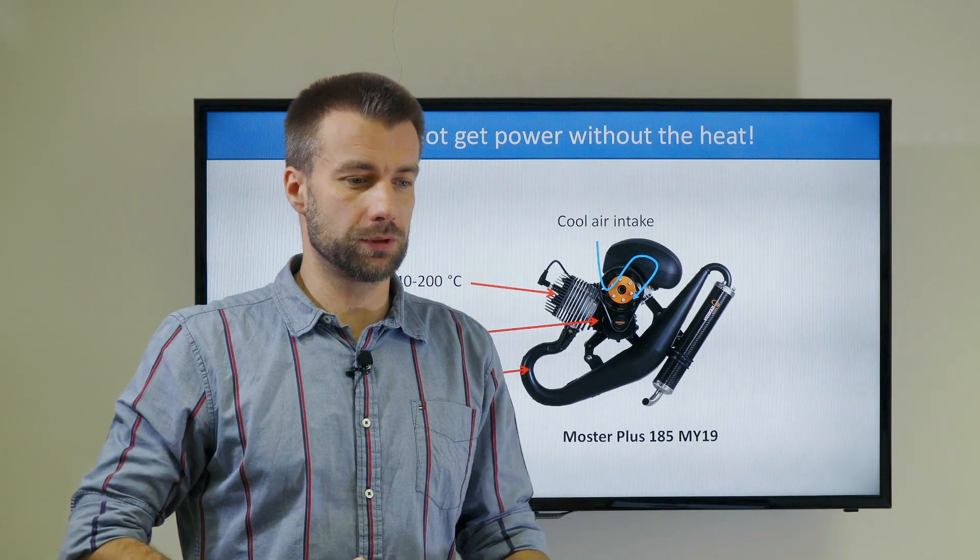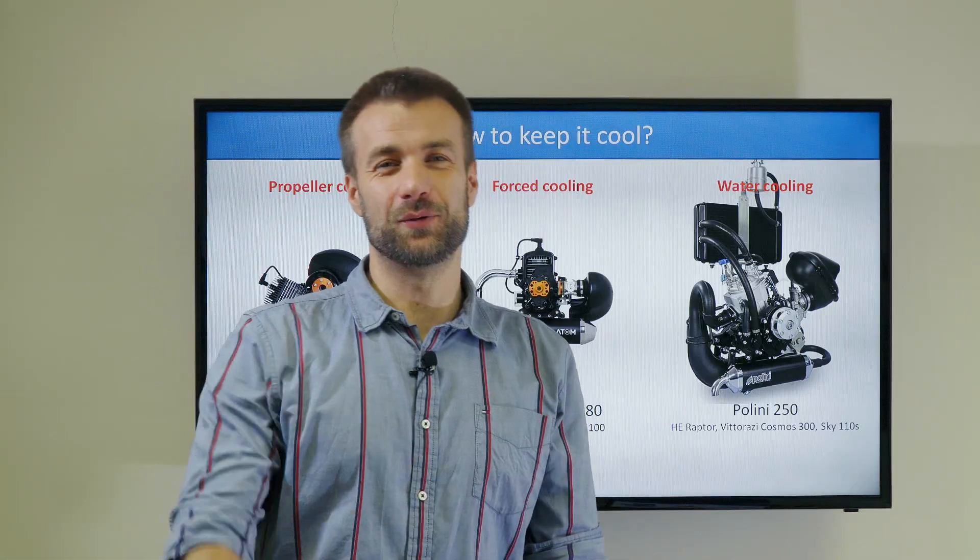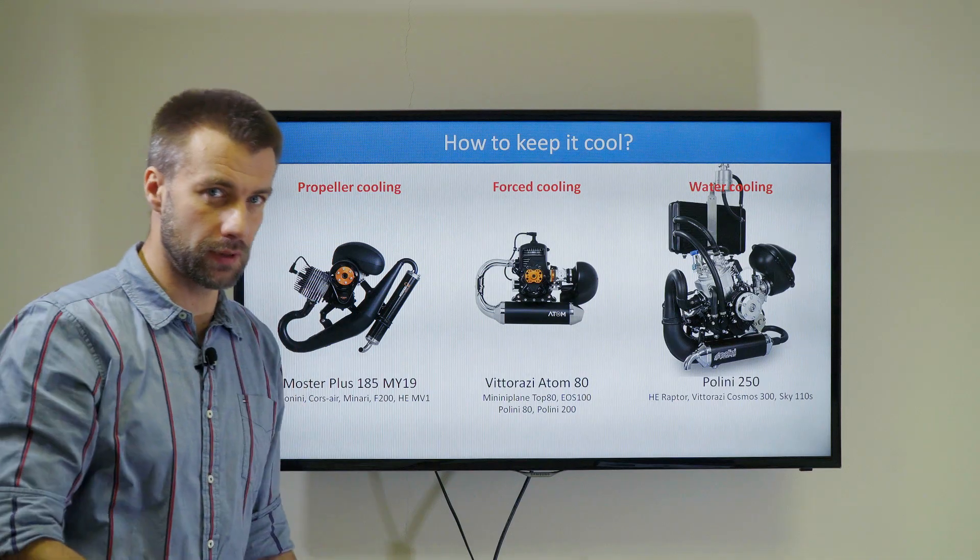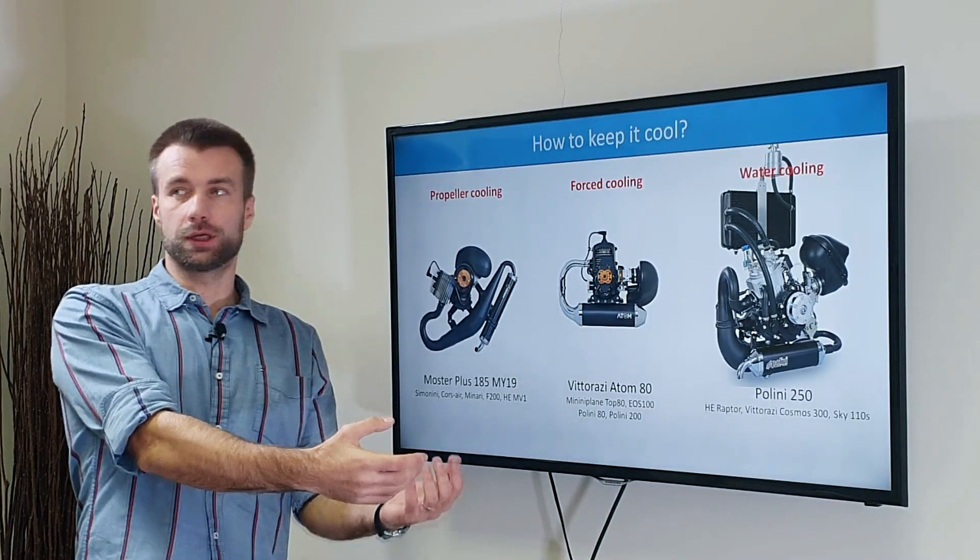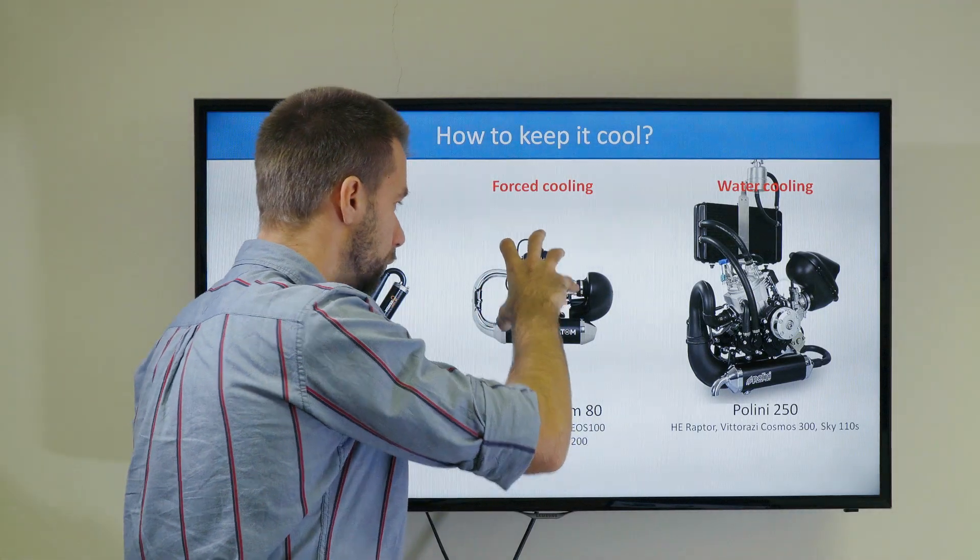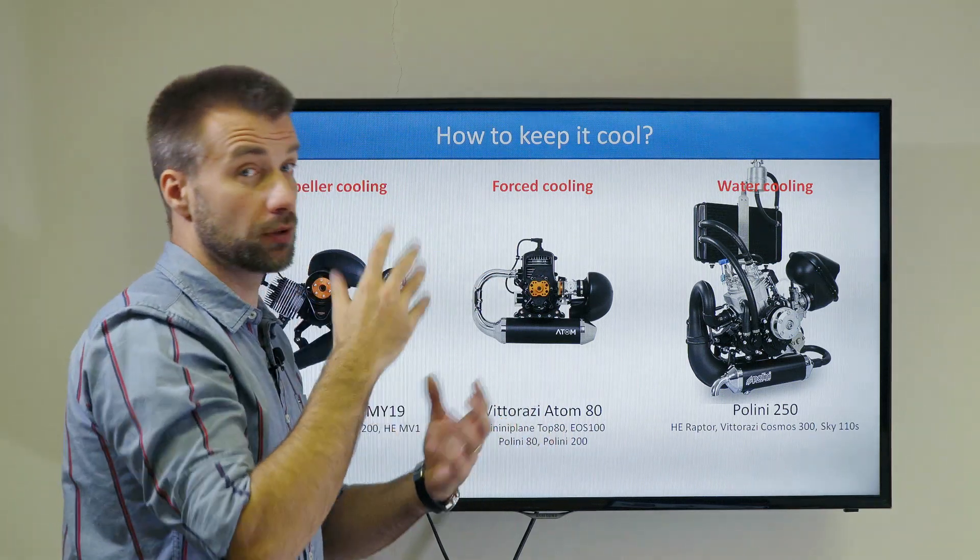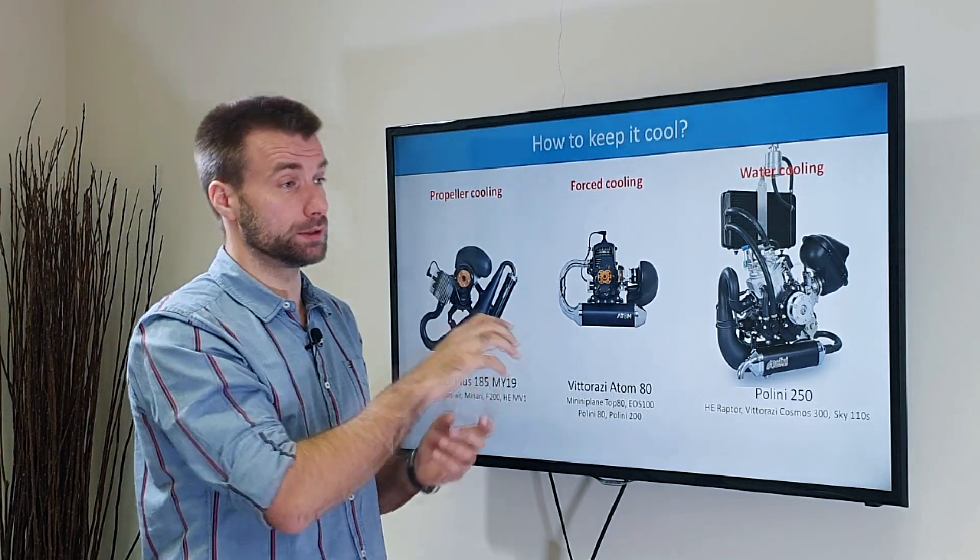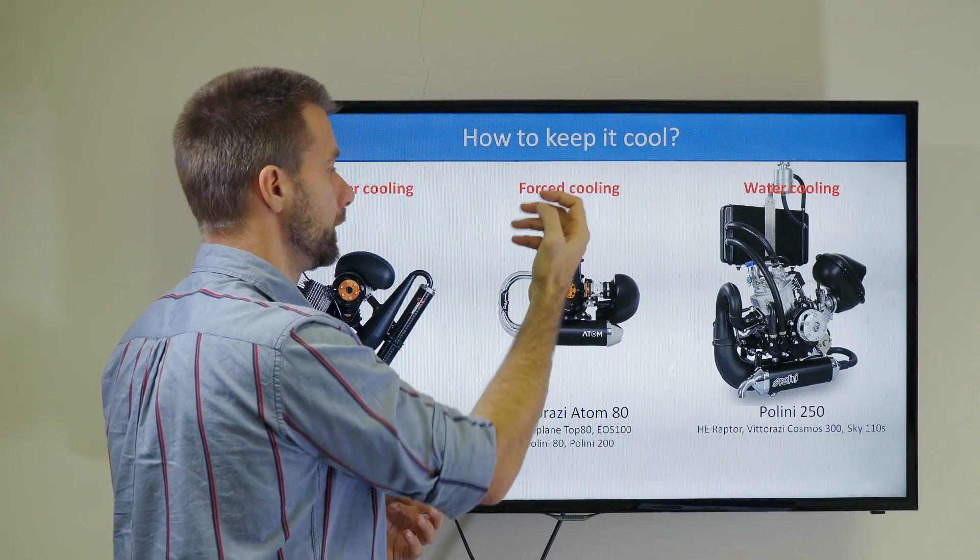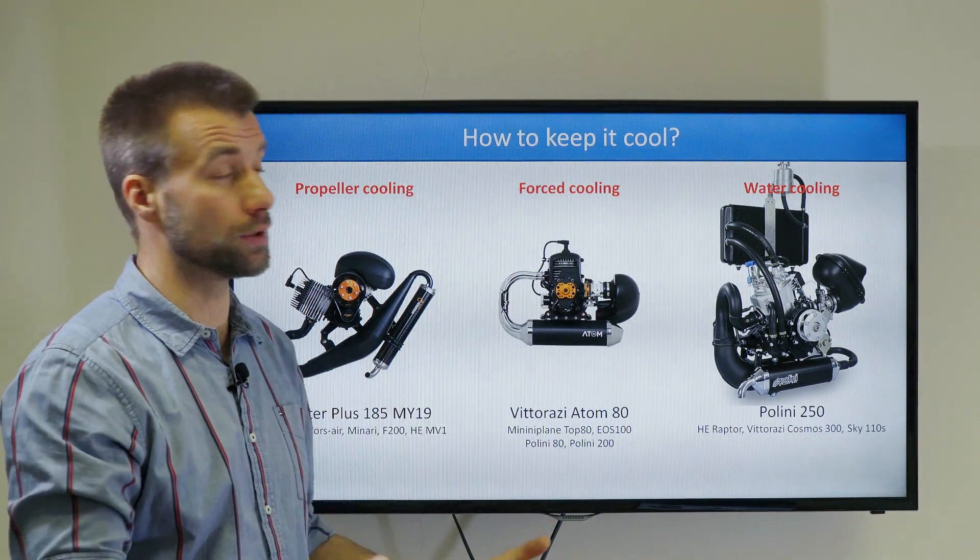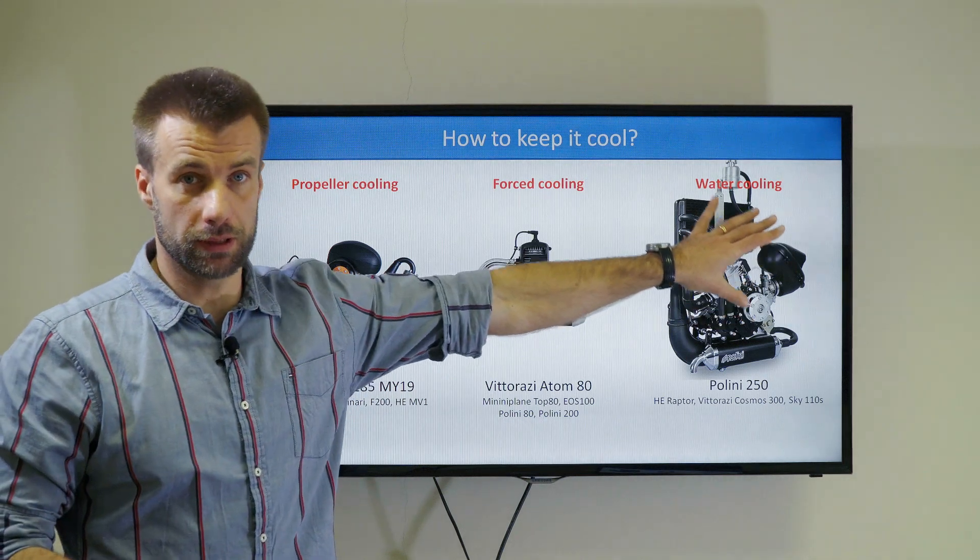Let's get into it. Basically we have three options: propeller cooling, that's just a bunch of ribs on the cylinder head and cylinder with airflow around it primarily generated by the propeller. Then we have forced cooling, where the whole engine is enclosed in a plastic or carbon fiber case. There's a little fan on the other side connected to the shaft, creating airflow. And obviously water cooling, the solution used for dirt bikes but very rarely on paramotors.